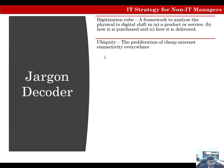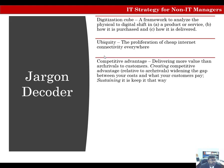Ubiquity is the proliferation of cheap internet connectivity everywhere. We'll use the term competitive advantage to talk about delivering more value than your rivals to customers — creating it by widening the gap between your costs and what customers pay, and sustaining it means keeping it that way. Because of the Red Queen race, other firms copy, so sustaining competitive advantage is a difficult proposition.